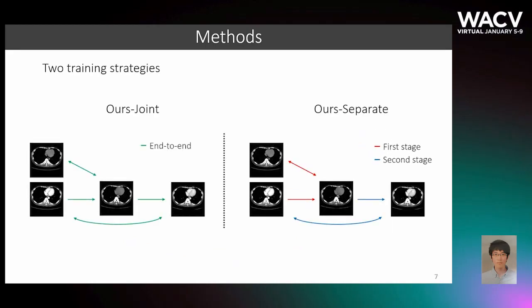We design two different versions of our method with two distinct training strategies. Our joint version trains both generators in the two-stage framework jointly in an end-to-end manner. On the other hand, our separate version trains the two generators one by one. We will see results of our method in the next slide.